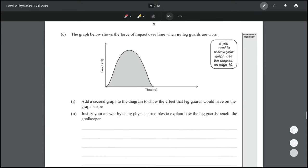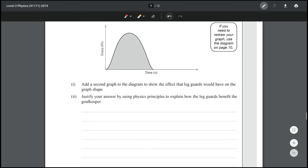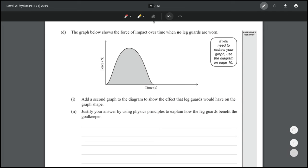All right, the graph below shows the force of impact over time when no leg guards are worn. Add a second graph to the diagram to show the effect that the leg guards would have on the graph shape. So the whole idea of wearing padding is to increase this time and when you increase this time and keep the impulse, the change in momentum the same, you are reducing this force which means the graph would end up looking something like this. And so the force is going to be less and the time is going to be longer and the change in momentum which happens to be the area is going to be the same.